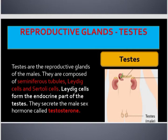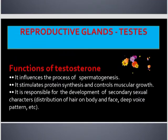The testis are composed of seminiferous tubules, Leydig cells, and Sertoli cells. Leydig cells form the endocrine part of the testis; they secrete the male sex hormone called testosterone.